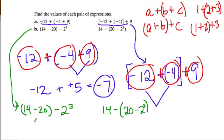So 14 minus 20. Well, there you're going to get negative 6. And then you're taking away 2 to the third power. What does that mean? Well, 2 to the third means 2 times 2 times 2. That's 2 times 2 is 4, times 2 is 8. So this is negative 6 minus 8, and that's going to give you negative 14.